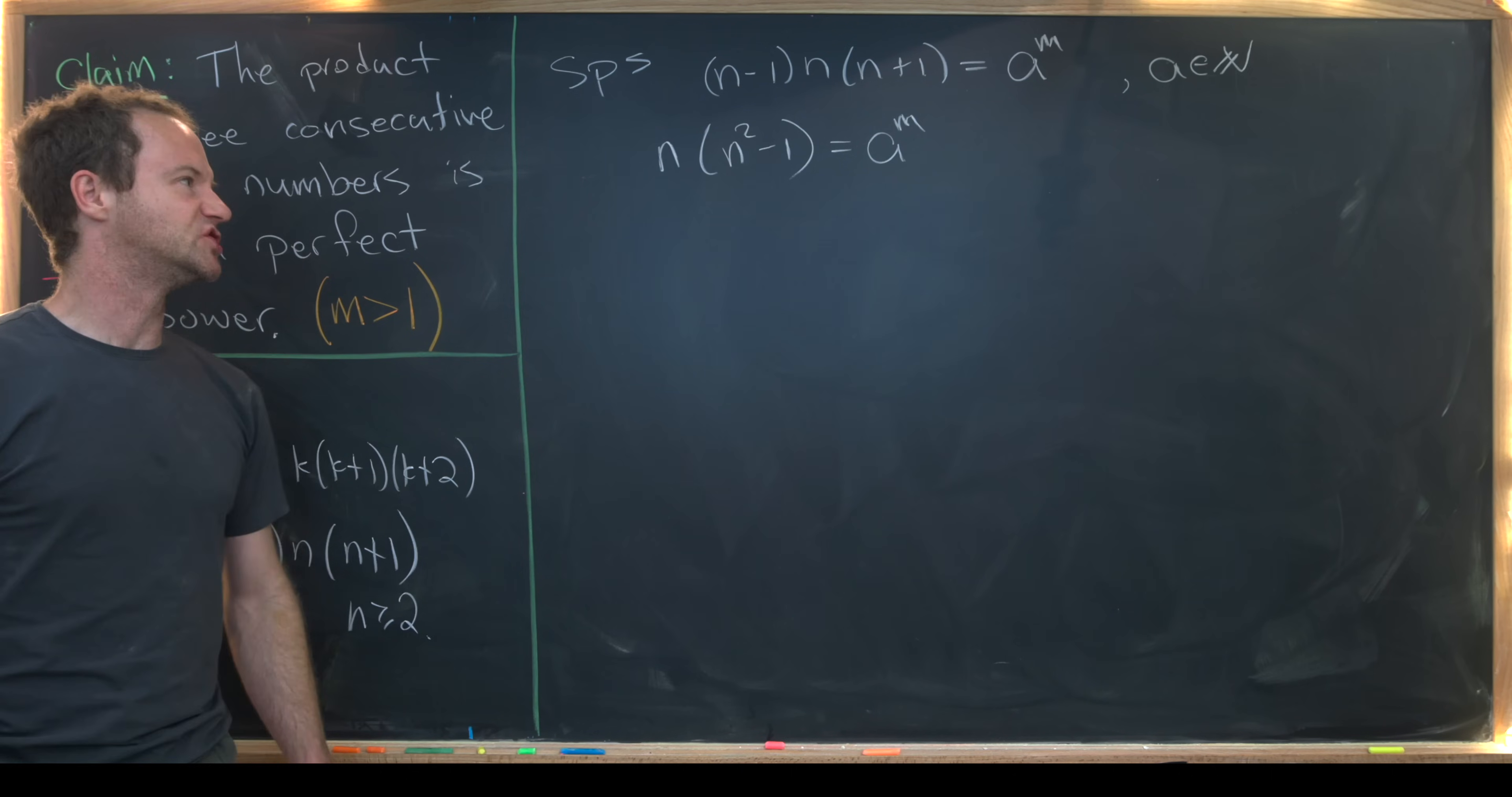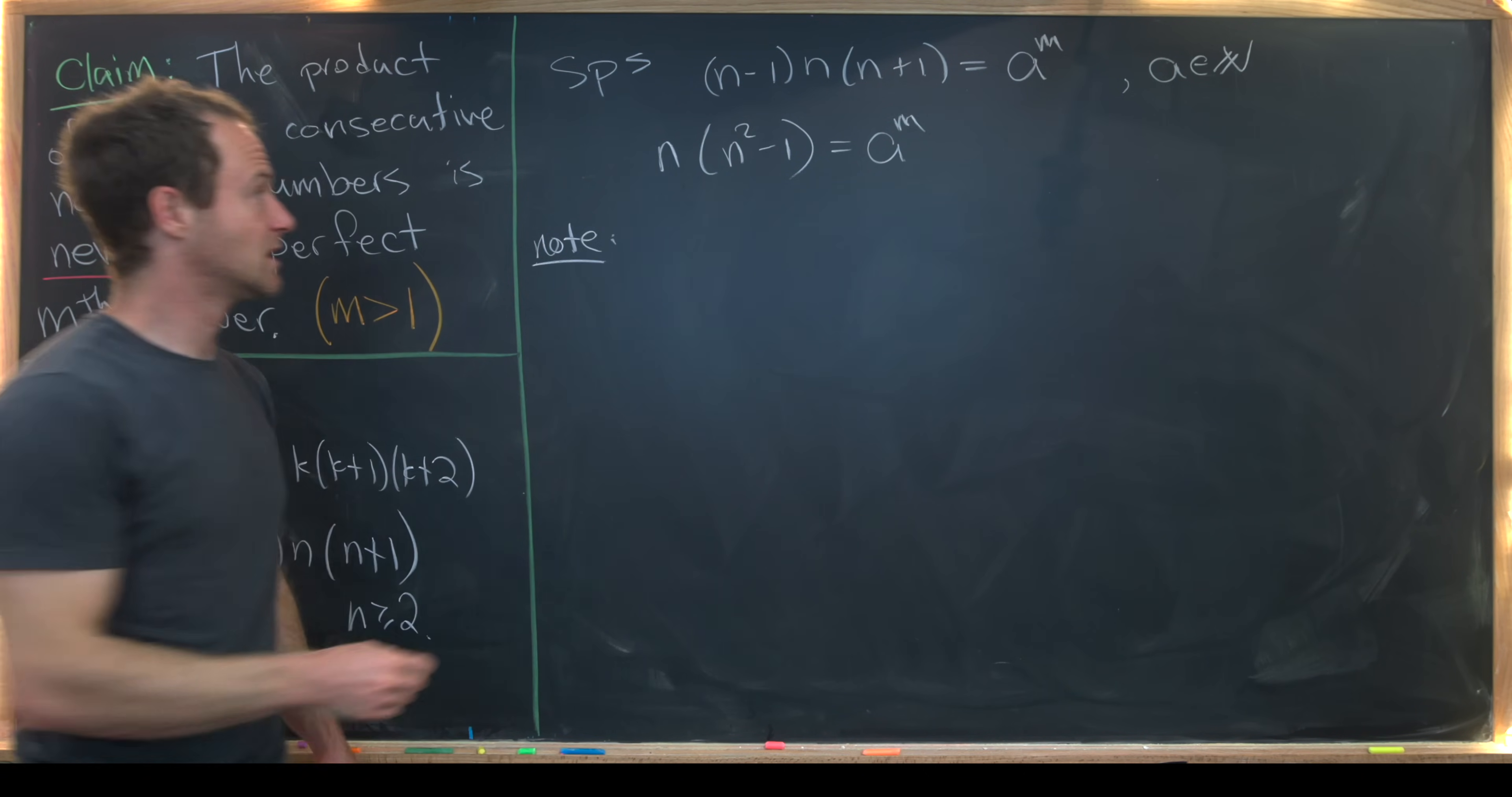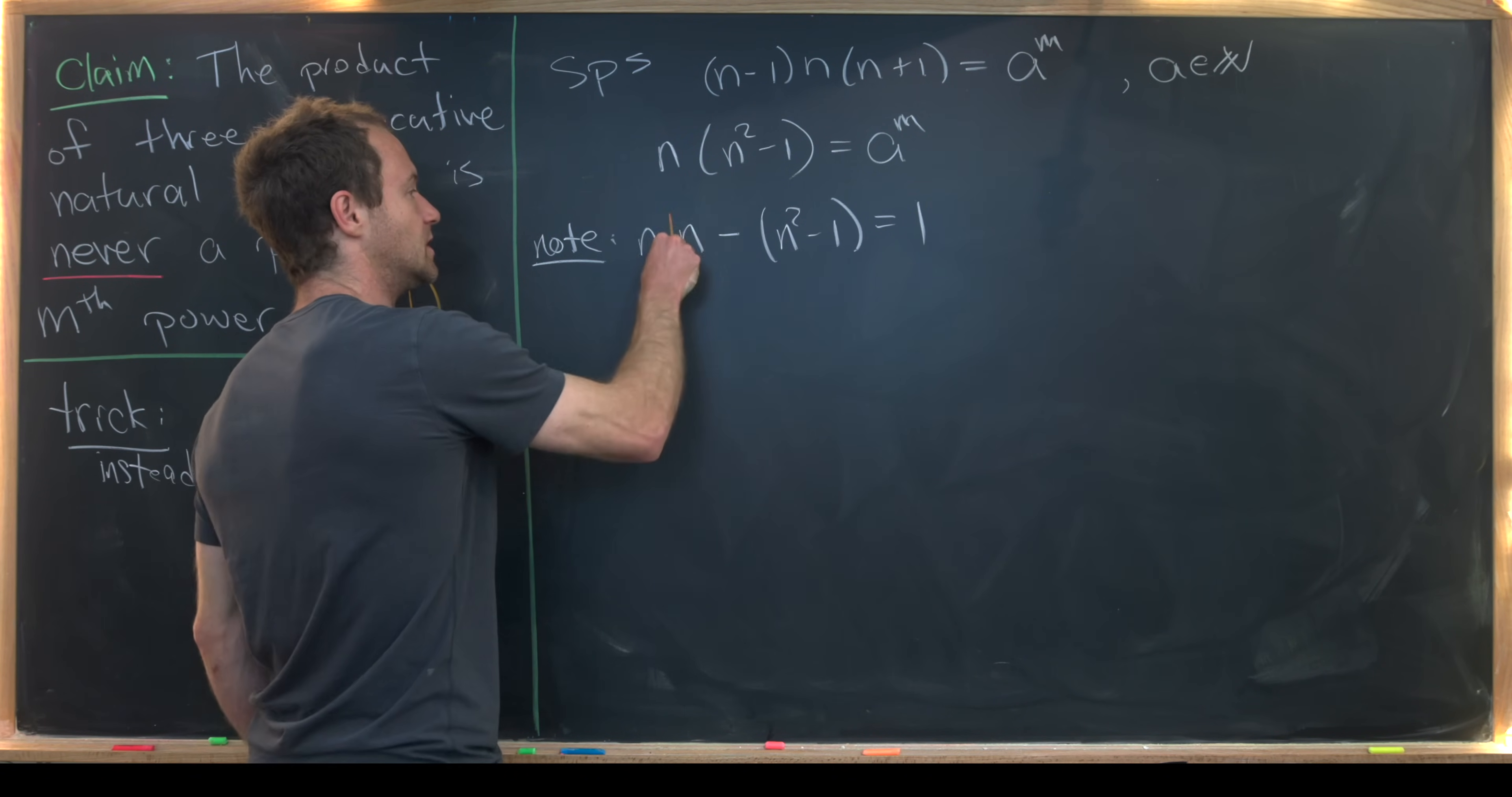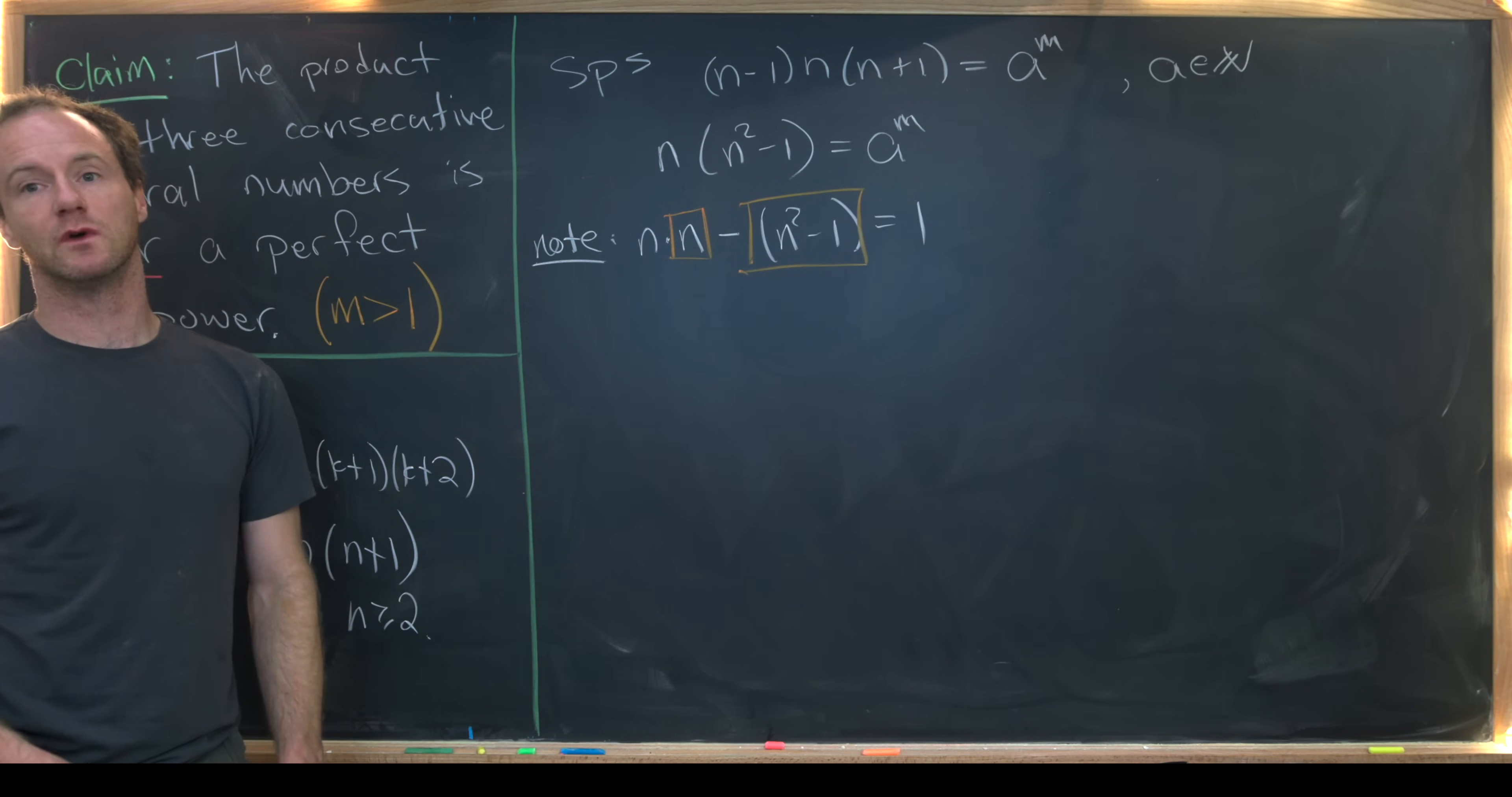But now I want to look at the GCD of these two portions of the product. So let's maybe notice we have the following fact. We have n times n minus n squared minus 1 is equal to 1. So that's kind of an obvious formula, but what did we do? We wrote n, we took n and n squared minus 1, and then we found a linear combination of them that is equal to 1.